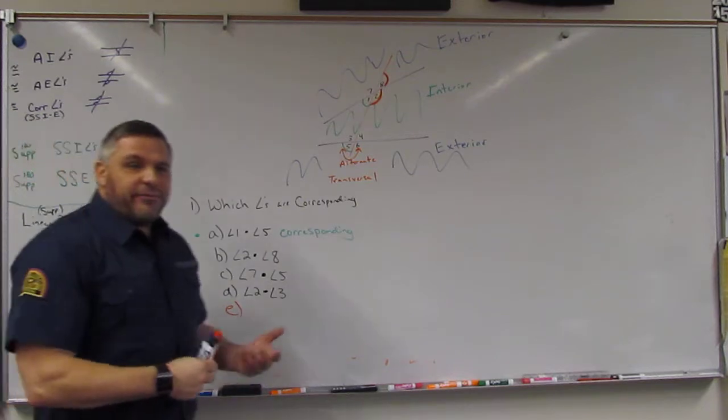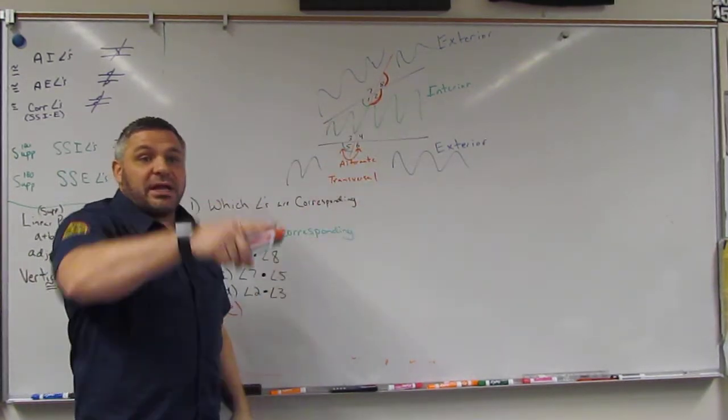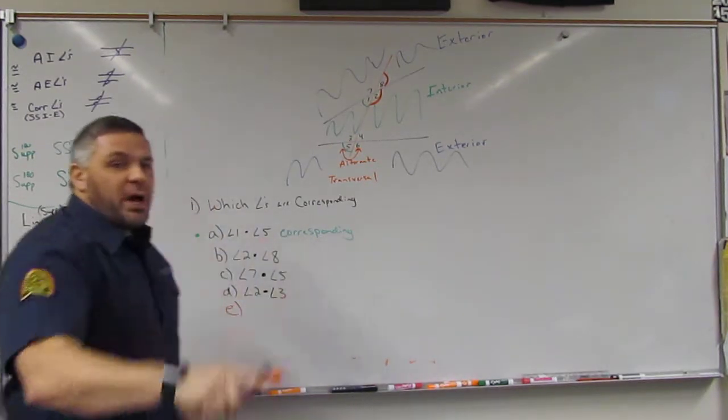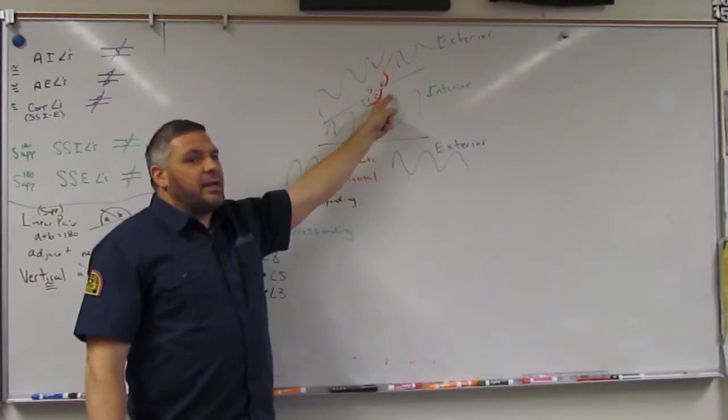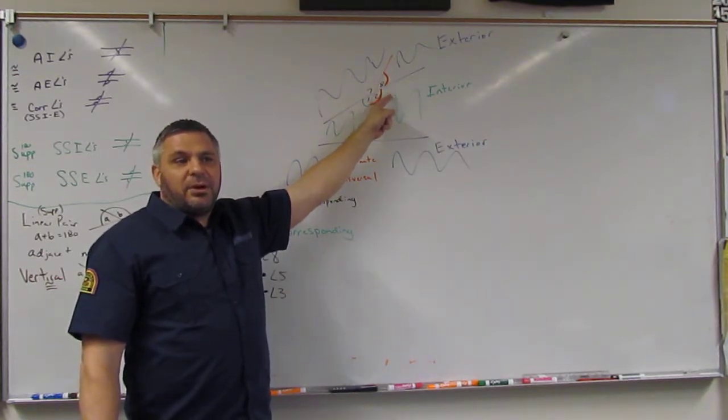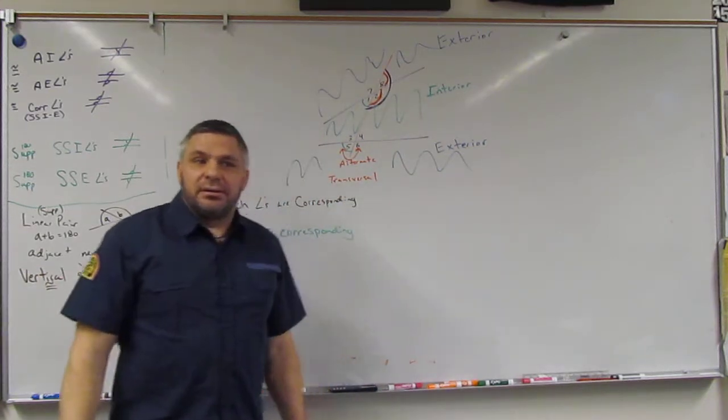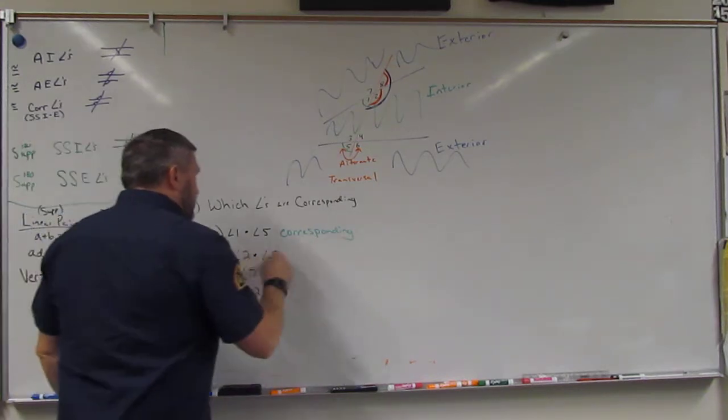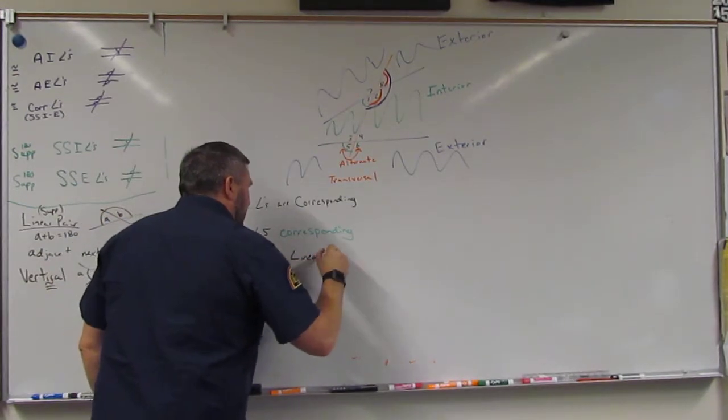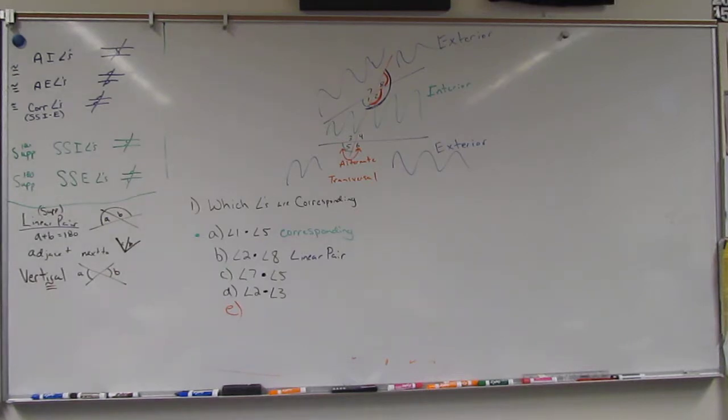Alright, so it's two and eight. And I want to really focus on this because two and eight, are they both interior? Are they both inside? They look like corresponding, right? Because one's inside, one's outside. But what's the problem with calling them corresponding? They cannot be adjacent. Are they adjacent? Are these adjacent? Are they next to each other? Yeah. So they are not corresponding. What are these called? This goes back to your original chapter one. They create a line, right? So what do we call that when they create a line? Linear pair. They're a linear pair. So these two are not corresponding. They are a linear pair. And that is a trick question. You will see something like that on a state test, I guarantee you.